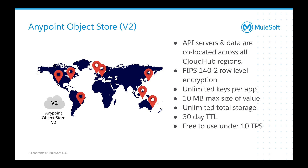V2 also offers better encryption — FIPS 140-2 — unlimited keys per application, a 10 megabyte max size of value instead of one megabyte, unlimited total storage, and a 30-day time to live. To maintain that 30-day TTL, you just have to reference that key or store another value from that application every couple of days. It's also free to use under 10 transactions per second, and there's an add-on that allows you to increase that transactions-per-second limitation.